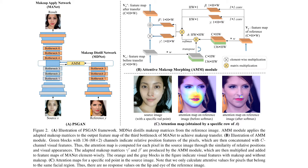We do that because the source image and the reference image may have large discrepancies in expressions and poses. The last part is the makeup applied network. The adaptive makeup matrices, gamma prime and beta prime, are applied to the bottleneck of the makeup applied network to perform makeup transfer, with pixel-level guidance by element-wise multiplication and addition.